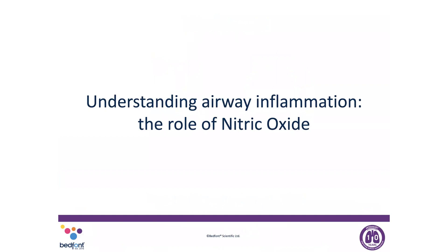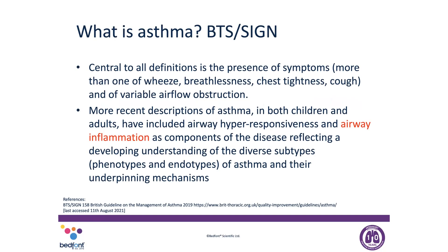So where does it fit in? Understanding airway inflammation is vital. We need to go back to the BTS guidelines, which tell us fairly clearly what the definition of asthma is. It's the presence of more than one symptom — wheeze, breathlessness, chest tightness, cough — and variable obstruction. More recently we've looked at airway hyper-responsiveness and, really importantly, airway inflammation as main components underlying asthma. We also talk about phenotypes and endotypes, recognising that not all asthma is the same.